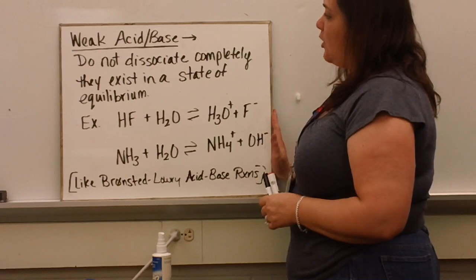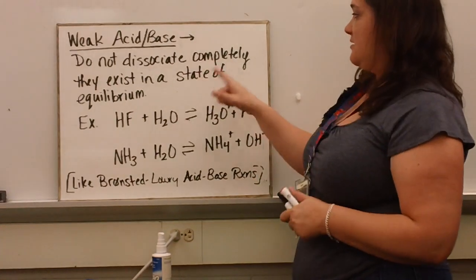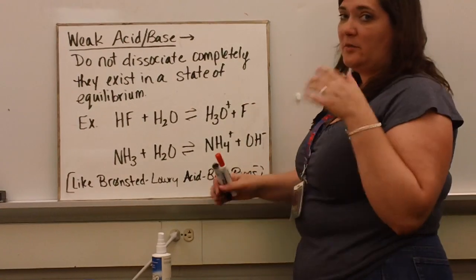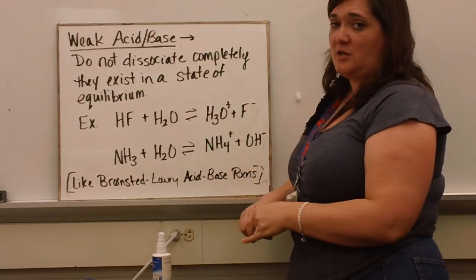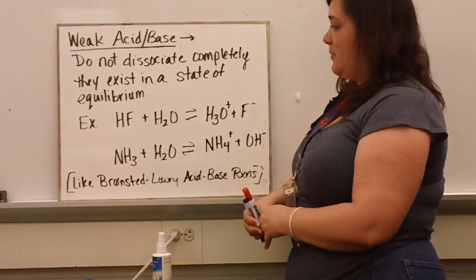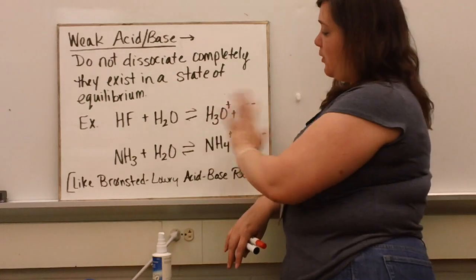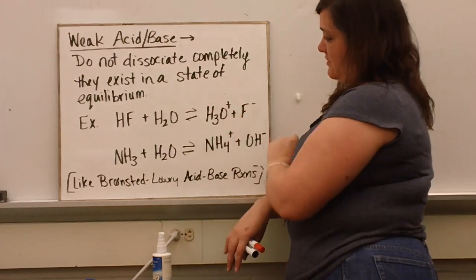All right, so a weak acid or base does not dissociate completely. They exist in a state of what we call equilibrium. We'll talk about equilibrium a few different times. In the next unit, we'll talk more about equilibrium. But basically, that means that the forward reaction and the reverse reaction are happening at the same rate. So both of these things are occurring at the same time.